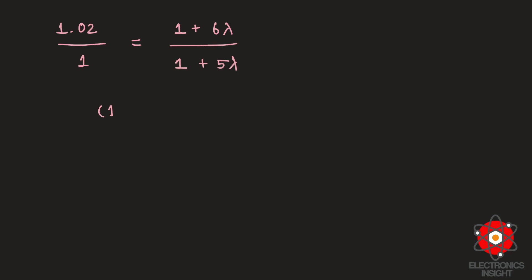When you interchange all these things, we get (1 + 5λ) × 1.02 = (1 + 6λ). When we bring all the lambda terms together, we have 0.9λ = 0.02.